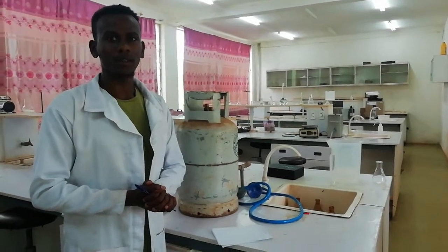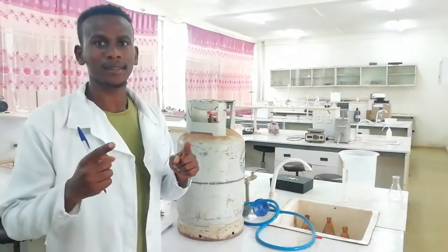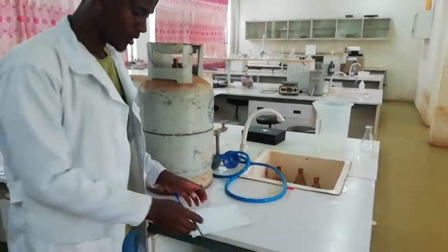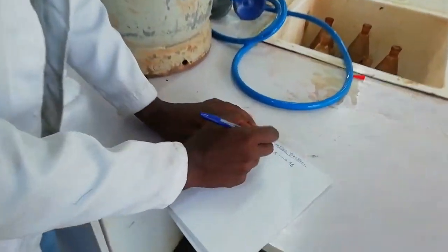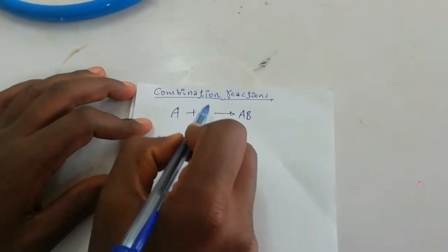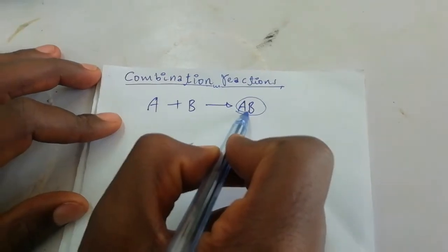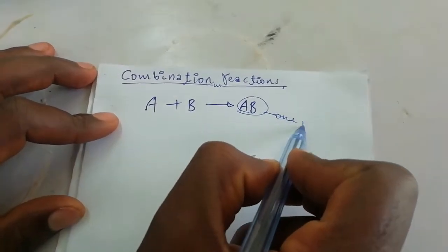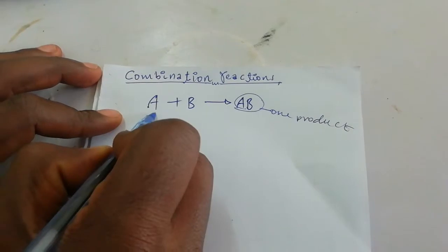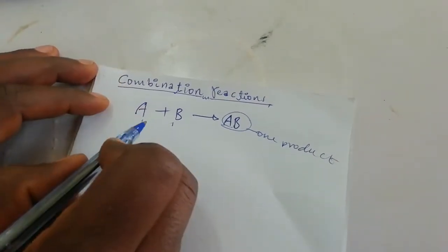In combination reaction, we have two reactants and only one possible product. For example, we have reactant A and reactant B, and the new product formed is AB. So we have one product and two reactants.